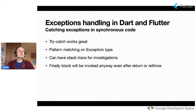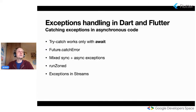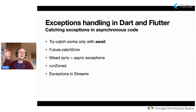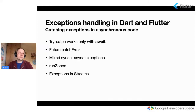Let me switch back to the presentation. To summarize what we already talked about: try-catch blocks in synchronous code, pattern matching, stack trace for investigation, and the finally block that will be invoked anyway. For exceptions in asynchronous code — you need to use the await keyword to be able to use try-catch. You can use catchError for futures, but for mixed synchronous and asynchronous exceptions, it's better to use try-catch again.